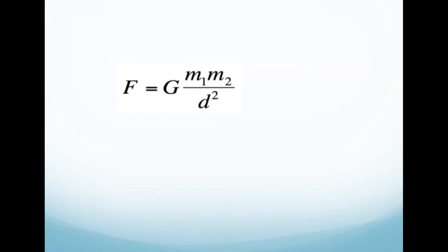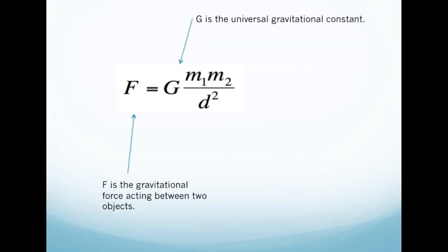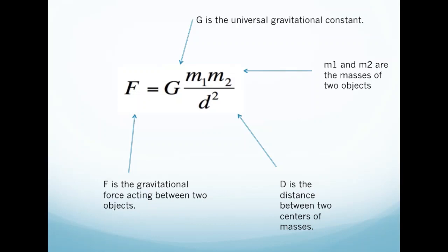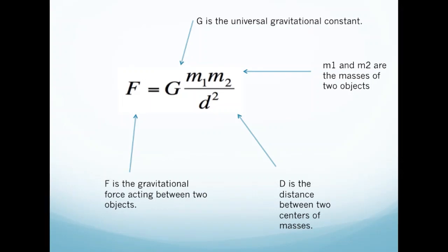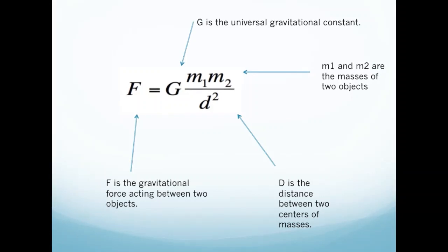Where F is the gravitational force, G is the universal gravitational constant, M is an object's mass, and D is the distance between the two objects. The scientist Henry Cavendish later found a reliable measurement of this constant, calculated to be 6.754 × 10⁻¹¹ N·m² per square kilogram. Nowadays, scientists have calculated this constant to be more like 6.67259.